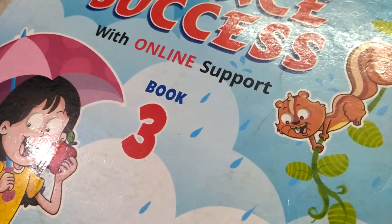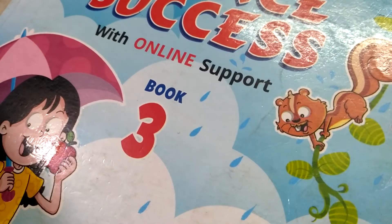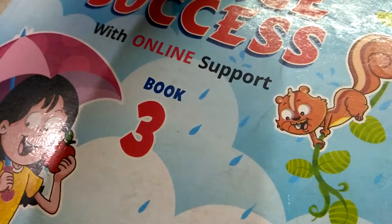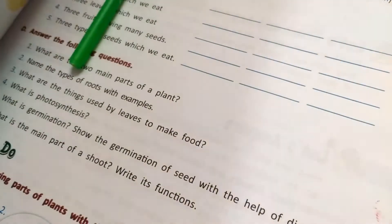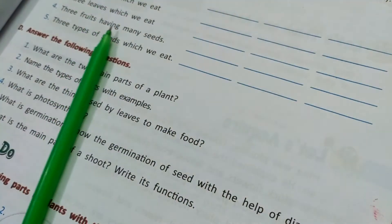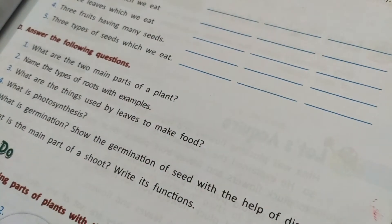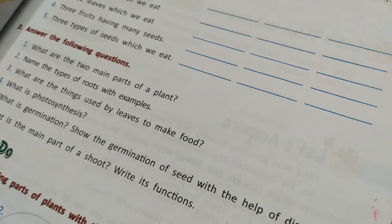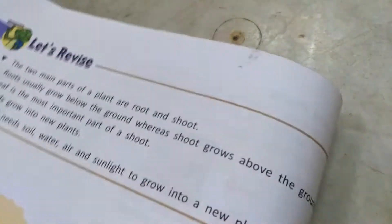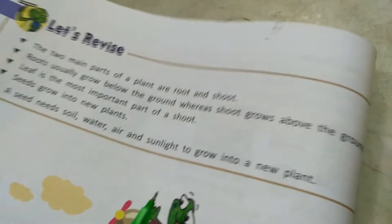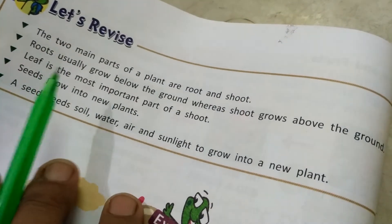Hello and welcome kids once again to your science classes of grade 3. In this part of the video I am going to explain the keywords plus book exercises of chapter number 7 of your science course book, which was about parts of a plant. But before starting the keywords, let's have a quick recap of the chapter through the 'Let's Revise' section on page number 58. Let's look at the main points we have studied in this chapter.